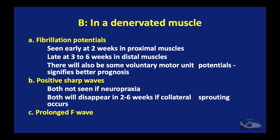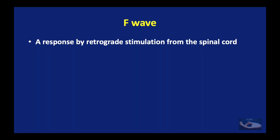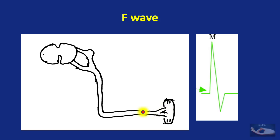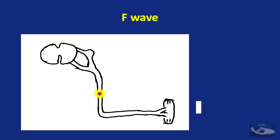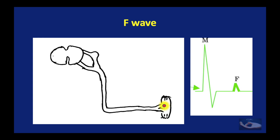Lastly, we have the prolonged F-wave. The F-wave is defined as a response by retrograde stimulation from the spinal cord. When we stimulate a motor nerve, the stimulus not only travels distally to stimulate the muscle, but also travels proximally to the spinal cord, where it stimulates the anterior horn cells. Another stimulus then travels down the nerve and stimulates the muscle again, causing a small depolarization known as the F-wave.